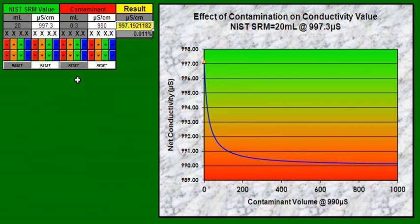We wouldn't expect a large value of contaminant, but this shows on an exaggerated scale what would happen. You can move the values around to see what does happen with it. Let's say that we were off and we actually had 10 milliliters or 20 milliliters of contaminant.